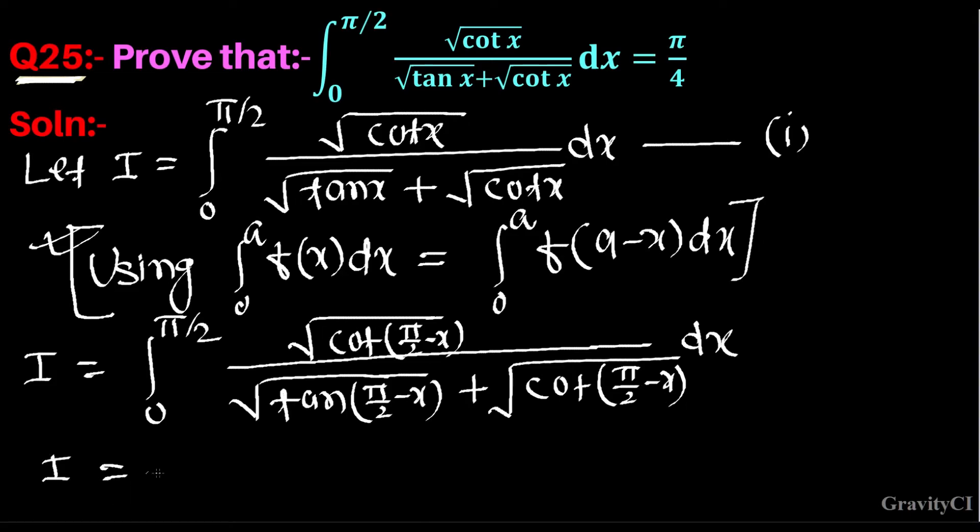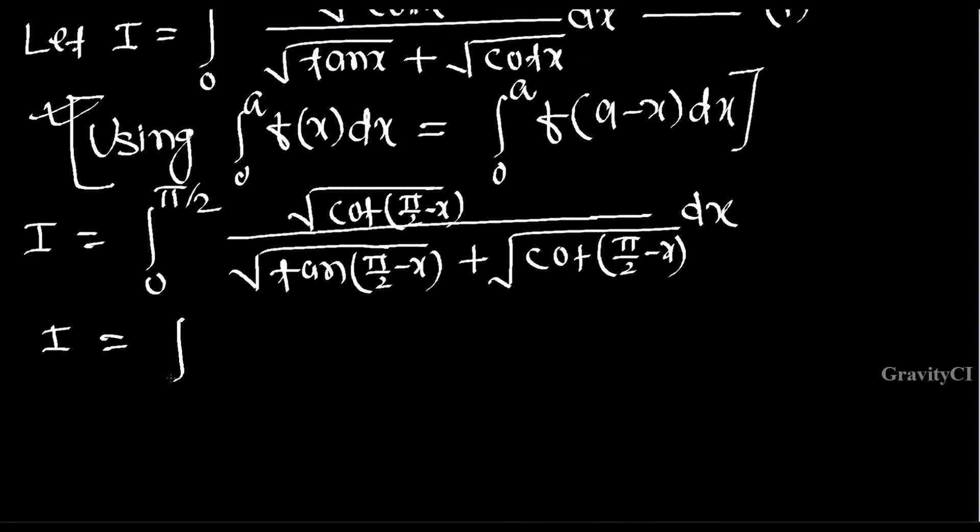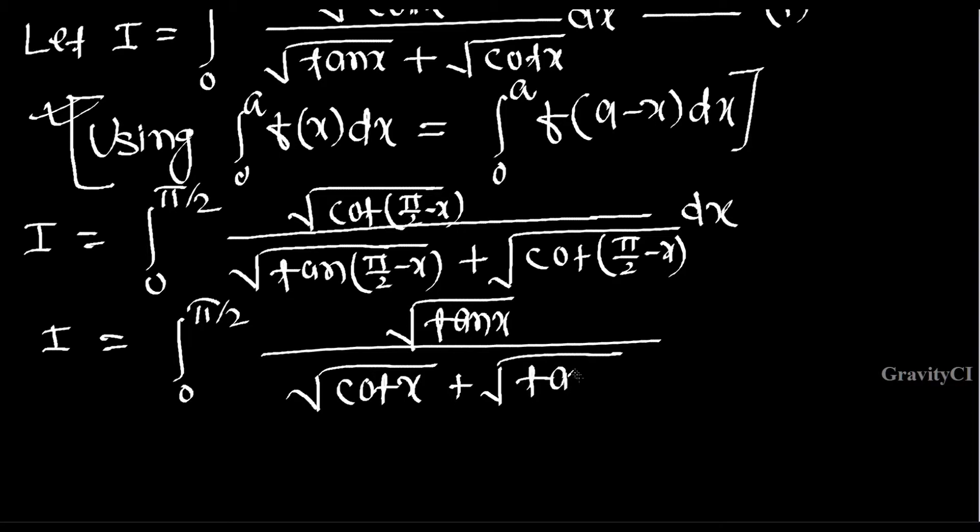So I equals integral 0 to pi/2. Since cot(pi/2 - x) equals tan x, this becomes root tan x upon root cot x plus root tan x. Suppose this equation is the second, and now we will add the first and second equations.